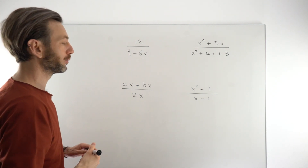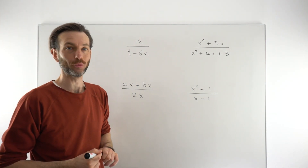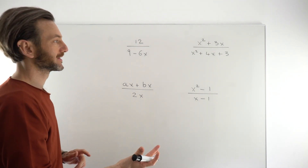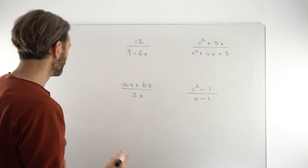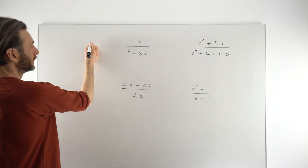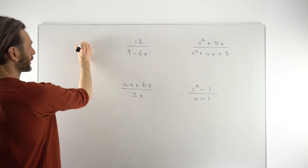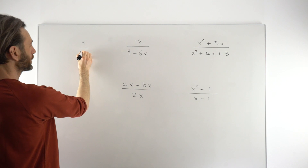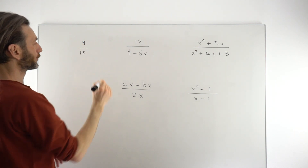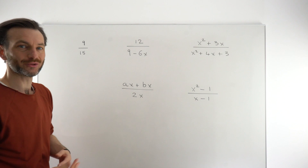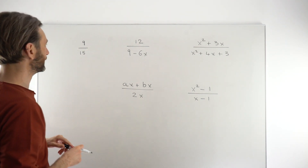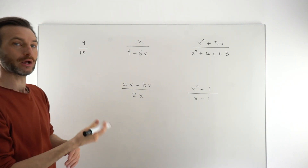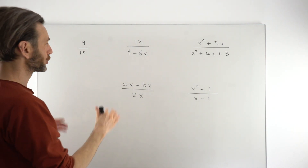But first of all, let's just think about what we might mean by simplifying an algebraic fraction. The good thing about working with algebraic fractions is the rules are basically the same as numerical fractions. So if we think about taking a numerical fraction like 9 over 15, one of the things that we commonly do with numerical fractions is write them in their most simple form. So if we saw the fraction 9 over 15, we might think: is that in its lowest terms? If not, let's make an equivalent fraction which is in its lowest terms.